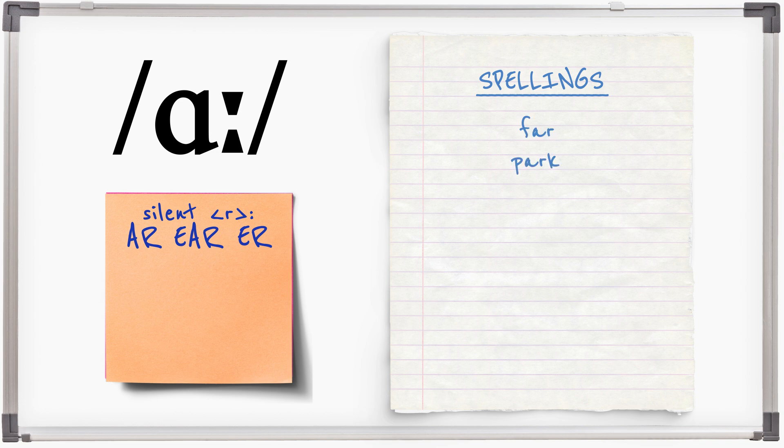Far, park, card, heart, clerk. Silent L can also indicate the R sound. Palm, half.